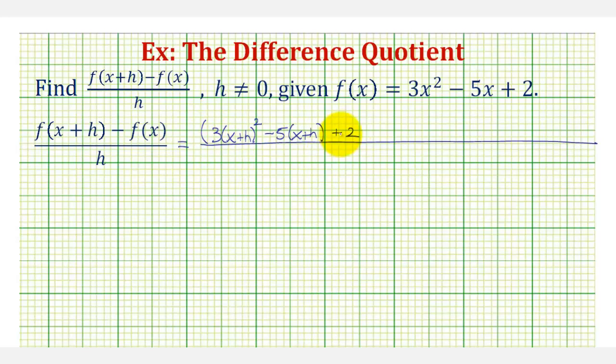Let's go ahead and put this in parentheses to keep things organized. And now we'll subtract f of x, so we'll subtract the quantity three x squared minus five x plus two. It is important that we have these parentheses around f of x, so that we make sure we subtract the entire function. And all this is divided by h.